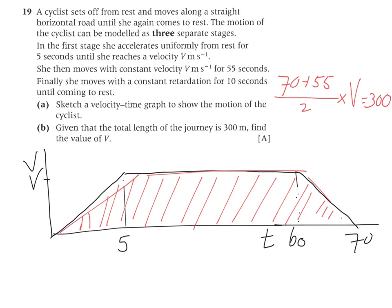If you would rearrange this now, so you do 70 plus 55 divided by 2, and then 300 divided by that answer, you're going to get V equals 4.8 meters per second. So that's going to be your answer. That's apparently the velocity.